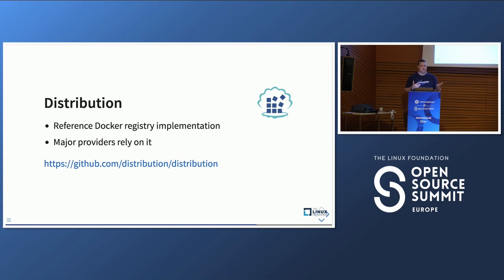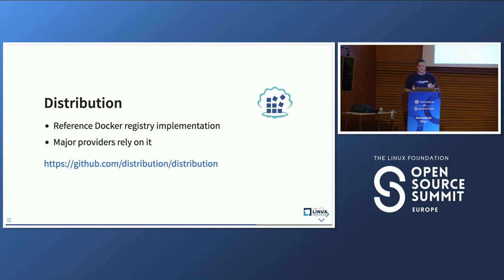Distribution is usually a good default choice, but the team is currently focused on delivering V3, so maintenance is a bit slow — the last minor version was from 2022. It also has a few missing features: for example, if you run it on AWS with S3 as a backend, it doesn't support workload identity authentication yet and requires an actual IAM user, which has been requested for a while but the team is working on V3.